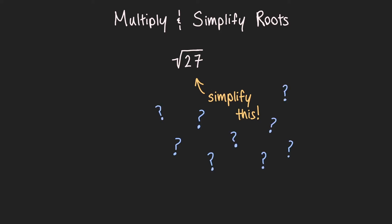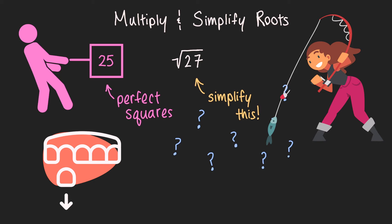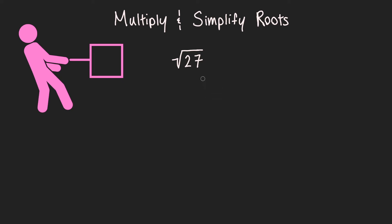We need to see if there are any perfect squares like 4, 9, 16, 25 and so on, hidden inside that 27 and then pull them out. Kind of like pulling out a tooth or fishing for something. And if that didn't make any sense, don't worry, we're about to go through all of this.